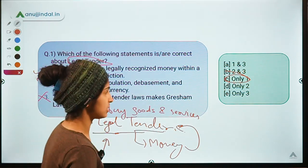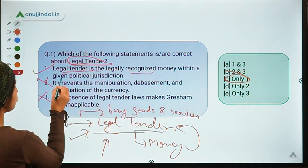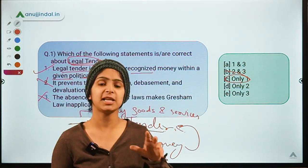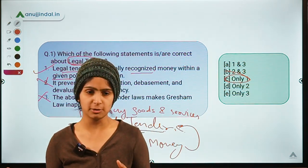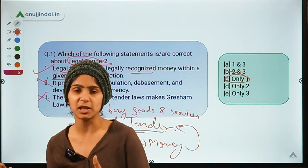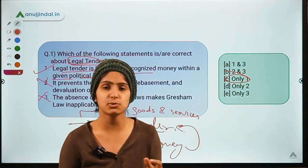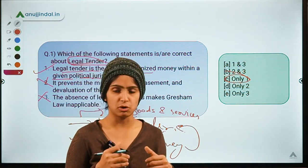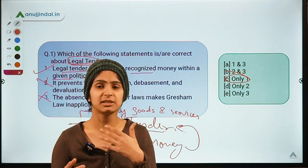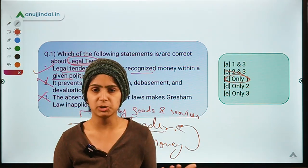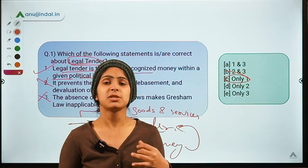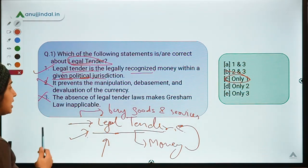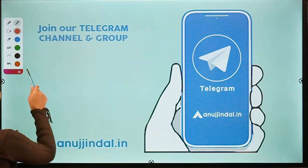Legal tender is the legally recognized money within a given political jurisdiction. That means one type of currency is only valid within one territory. For example, if you have Indian rupees and go abroad, they will be of no use — there you have to provide dollars. Similarly, foreigners coming to our country cannot use their currency to buy goods and services; they will need Indian rupees. So legal tender is valid within a given territory, within a given political jurisdiction.